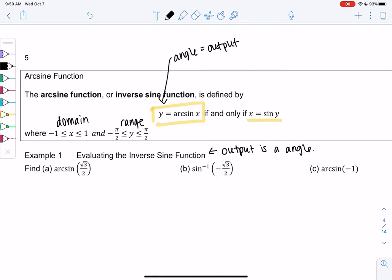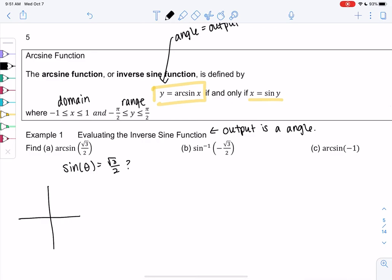So arcsine of root 3 over 2 is basically saying sine of what equals root 3 over 2. We'll go back to that unit circle - sine is positive up here. So root 3 over 2, that'll be what, 60 degrees? Let's stick with radians: pi over 3.